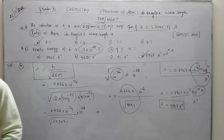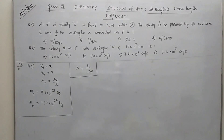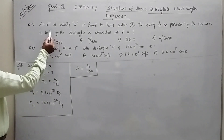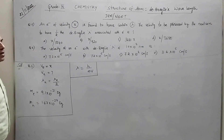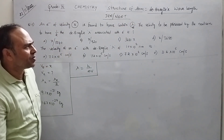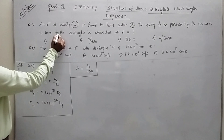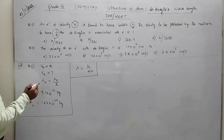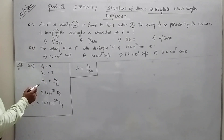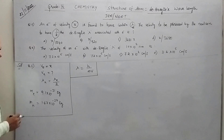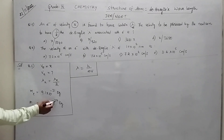Now let us see question number 5 and 6. An electron has velocity x to give a certain wavelength lambda e. The velocity required by the neutron so that its wavelength is half of the de Broglie wavelength of the electron. Velocity of electron is taken as x; find velocity of neutron. Lambda n is half of lambda e. Mass of electron is 9.1 into 10 to the power of minus 31, and mass of neutron is 1.67 into 10 to the power of minus 27 kg.